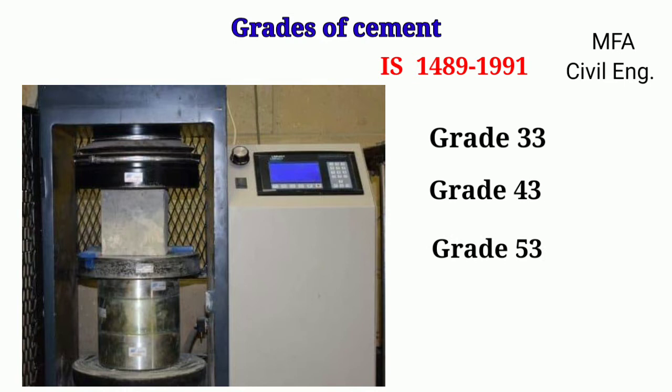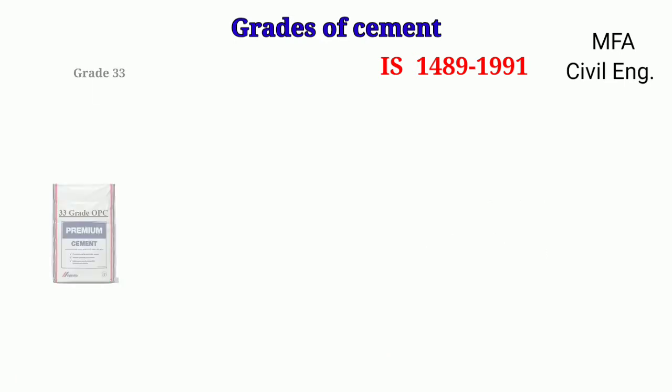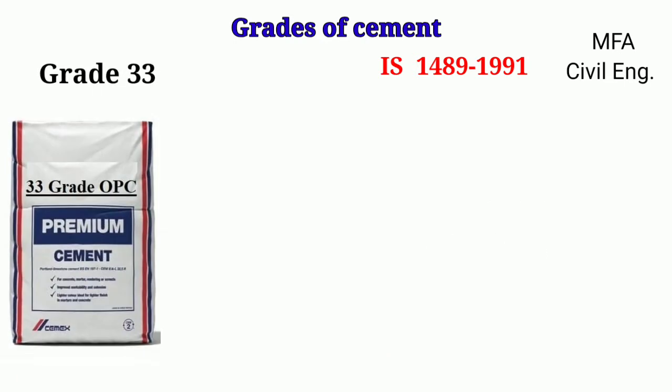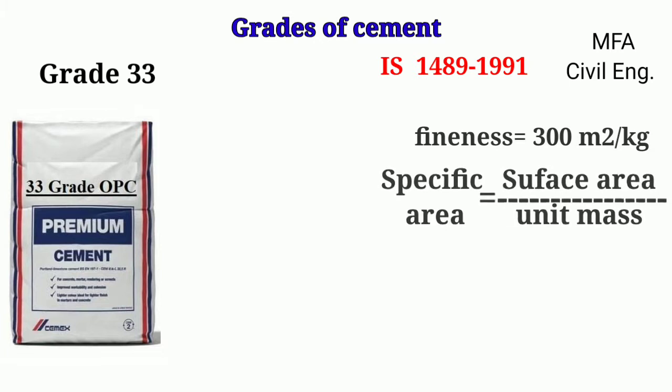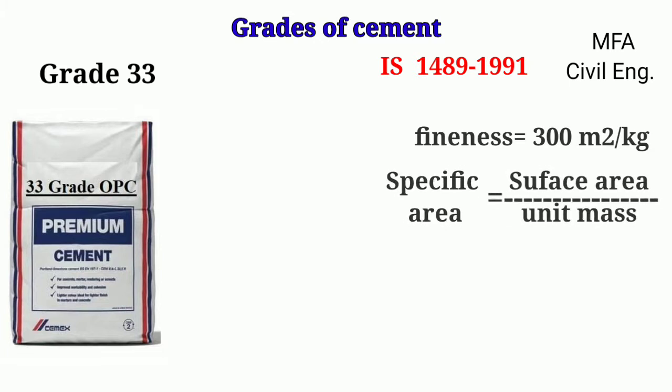For a 33 grade of cement, the specific area or the fineness is about 300 m² per kg of cement. Specific area is the total surface area of a material per unit mass.